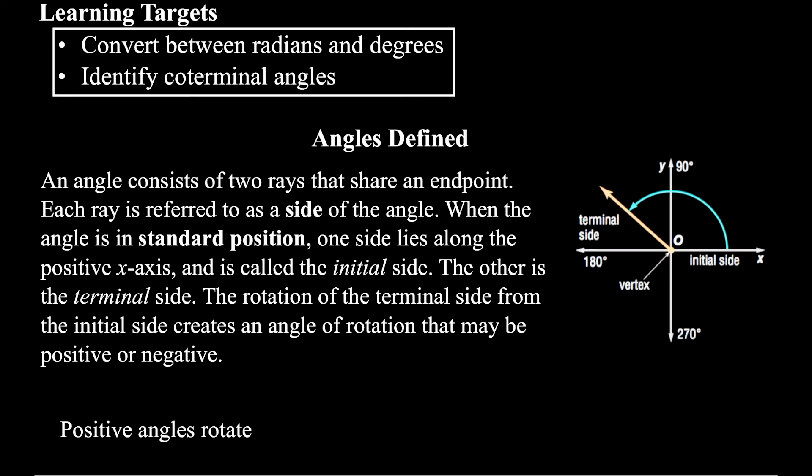Welcome to our next lesson on angles and angle measure. In this lesson we're going to be doing a couple of different things. We are going to be converting between radian and degree modes, and we're also going to be identifying and labeling coterminal angles. And we'll be learning how to graph different kinds of angles as well.